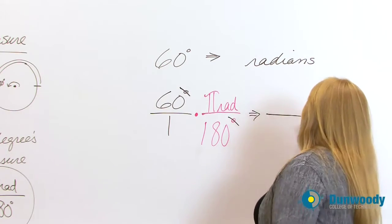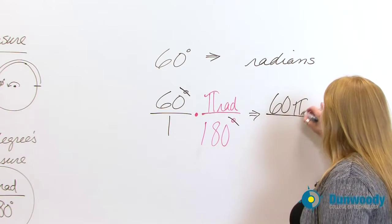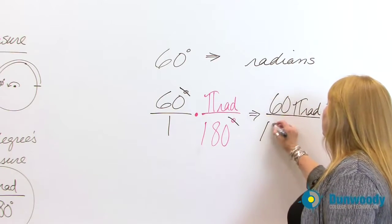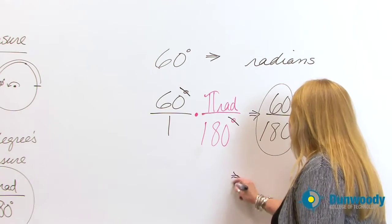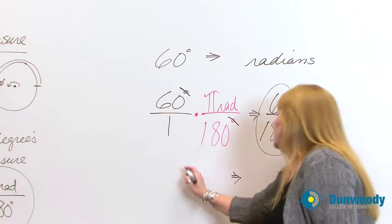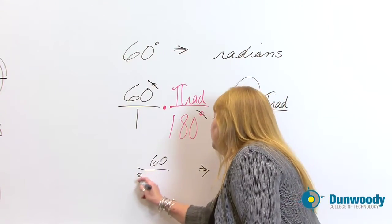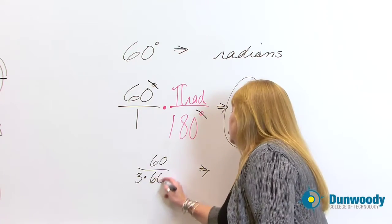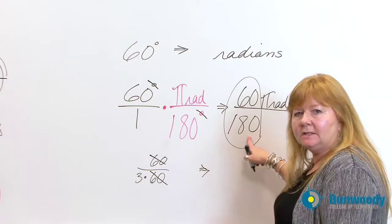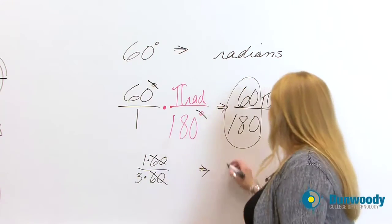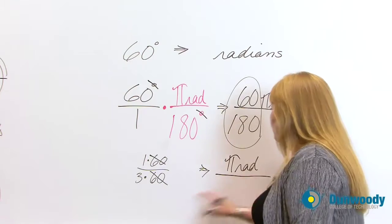Now my unit of measure is pure radian measure. So what are we left with? Look at what's left in the numerator. I have 60 times pi times radian. I have 60 pi rads over 1 times 180. And now what you need to do is simplify this. If you stay in fraction form, you know that you can reduce this fraction because what is 180? 3 times 60.